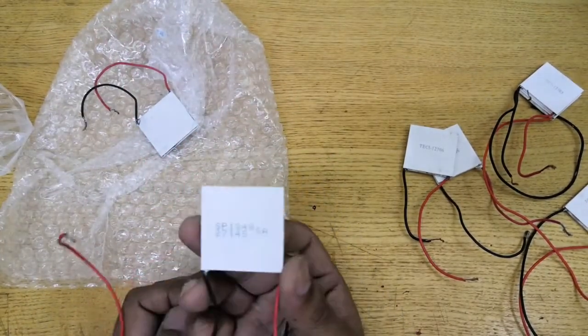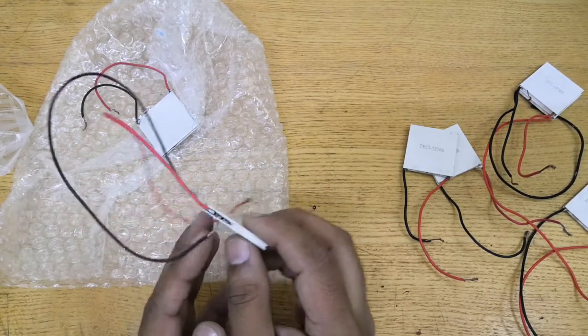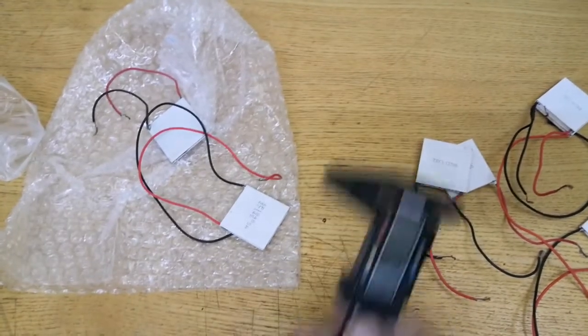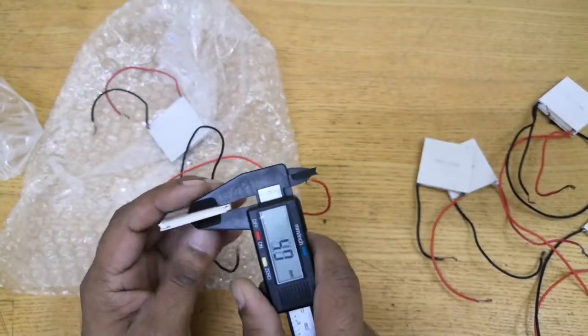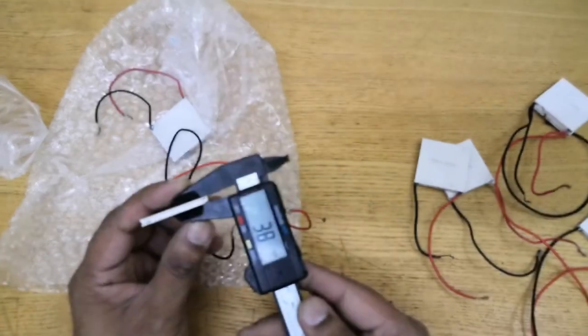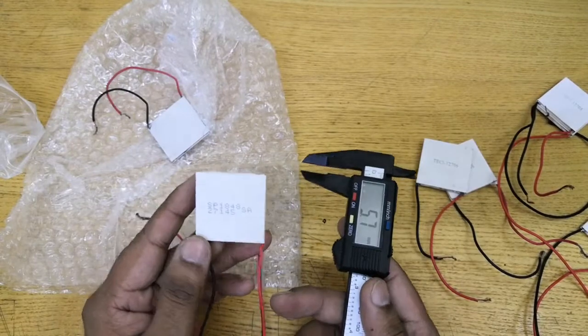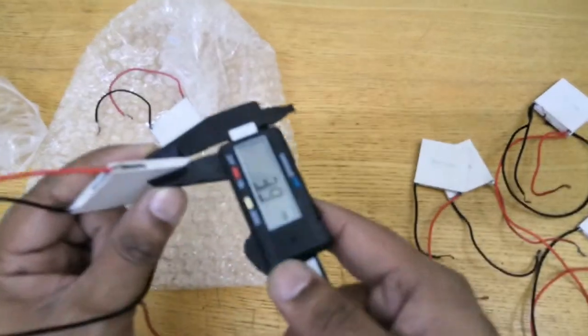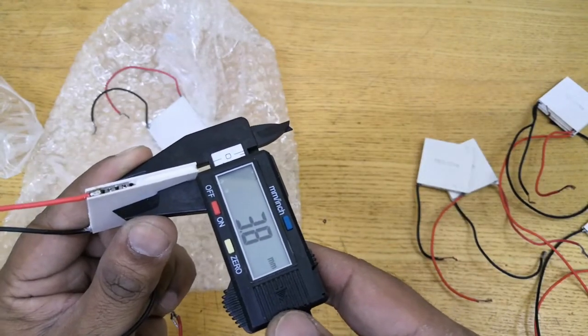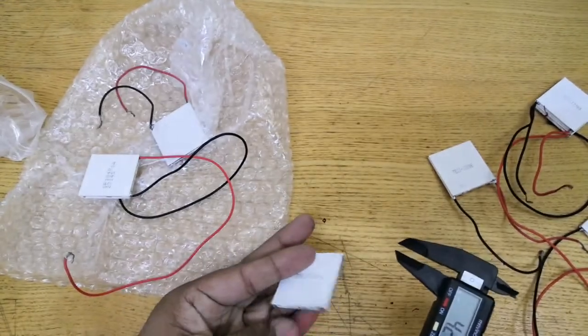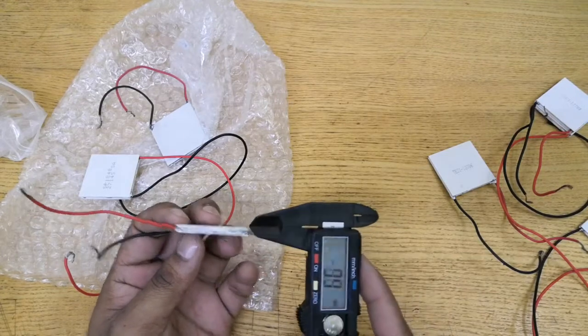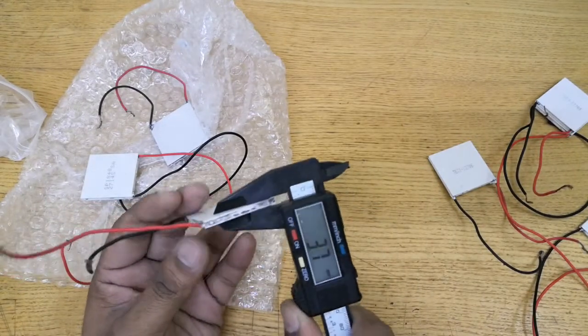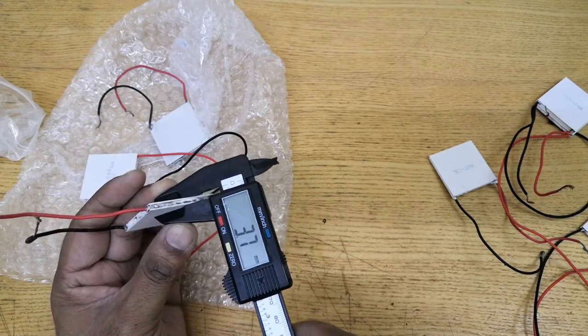These high temperature resistant chips are useful. Today I'm going to talk about the width of the Peltier, which is very important. This SP1848 chip is 4mm. The distance between the two ceramic plates is very important because it's going to transfer heat from one end to the other, which affects the cooling side badly.